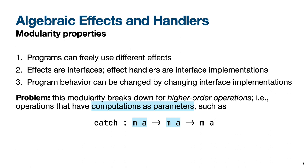The problem is that this modularity breaks down for higher-order operations — that is, operations that have computations as parameters. An example of a higher-order operation is the catch operation whose type is shown on the slide. The operation is parameterized by two computations, where the first corresponds to the try-block of an exception handler, and the second corresponds to the exception handler. The question is how we can define this and other common higher-order operations found in, for example, Haskell's popular monad transformer library, in a way that affords the same modularity properties as non-higher-order effects.